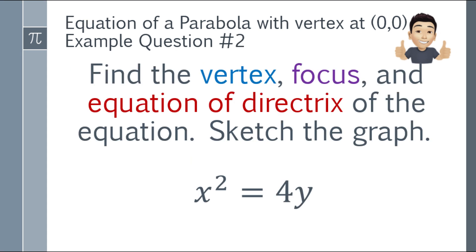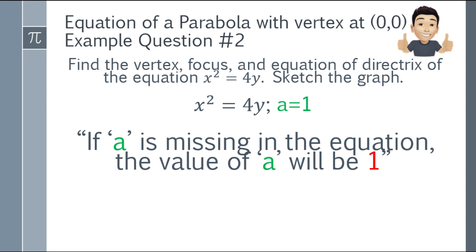Let's move to example question number 2: Find the vertex, focus, and equation of the directrix given x² = 4y. Sketch the graph. When the equation is x² = 4y or y² = 4x with no A visible, the value of A is automatically 1 — because if A = 1, x² = 4(1)y = 4y. A cannot be 0 because that would make the whole equation zero.